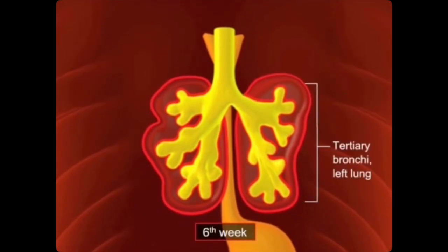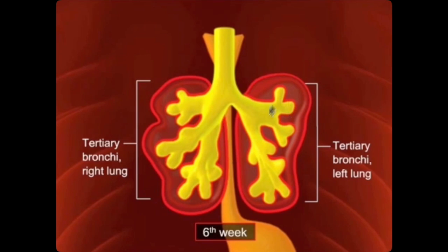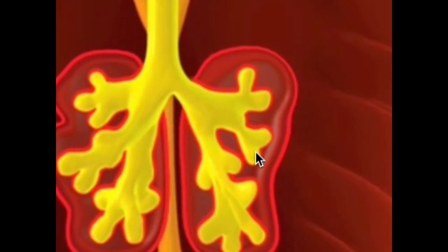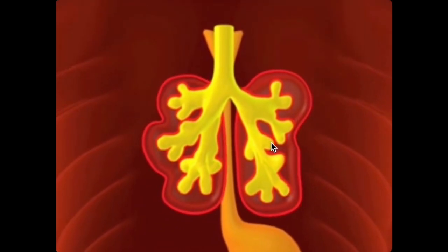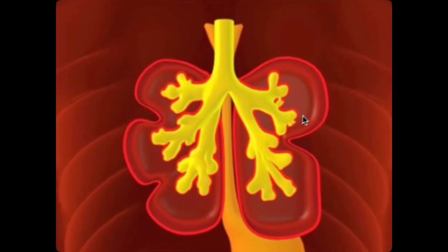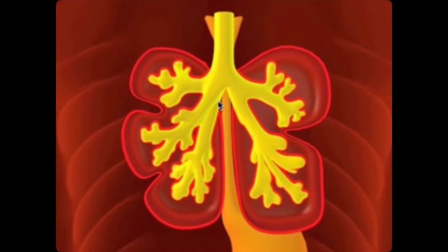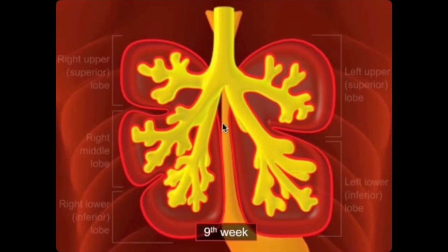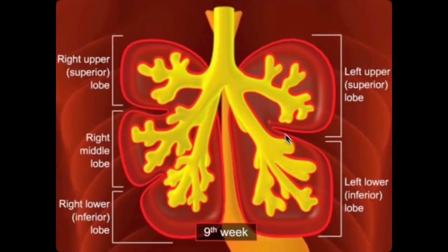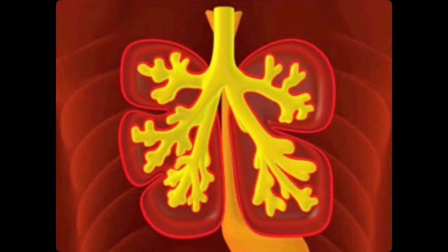By week six, there are ten tertiary branches on the right and nine on the left, each supplying a discrete area of the lung called the bronchopulmonary segment. As the bronchial buds branch, they extend laterally into the pericardioperitoneal canal, impinging on that lateral space more and more.